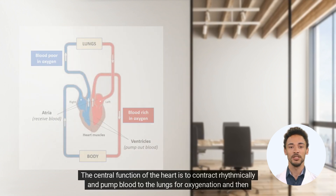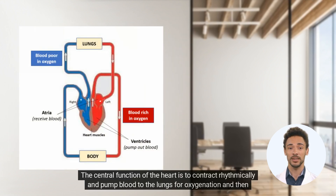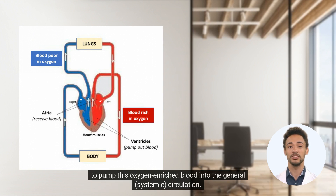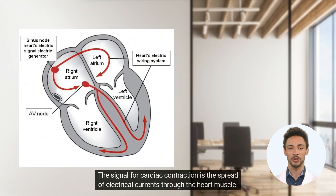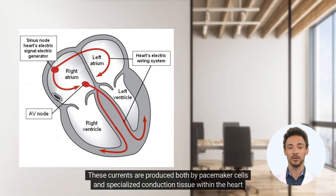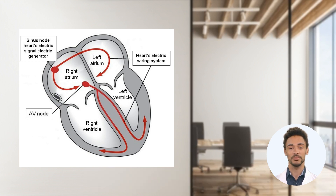The central function of the heart is to contract rhythmically and pump blood to the lungs for oxygenation, and then to pump this oxygen-enriched blood into the general systemic circulation. The signal for cardiac contraction is the spread of electrical currents through the heart muscle. These currents are produced both by pacemaker cells and specialized conduction tissue within the heart, and by the working heart muscle itself.